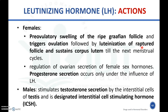Luteinizing hormone (LH) has different actions in females and males. In females, LH produces pre-ovulatory swelling of ripe Graafian follicles, triggers ovulation, followed by luteinization of ruptured follicles and sustaining the corpus luteum until the next menstrual cycle. LH also regulates ovarian secretion of female sex hormones; progesterone secretion occurs only under the influence of LH.